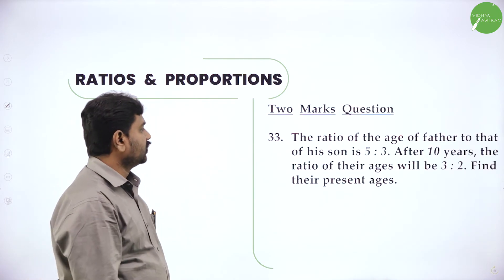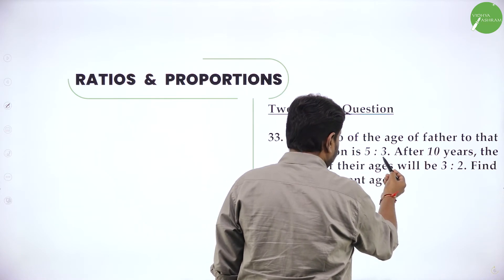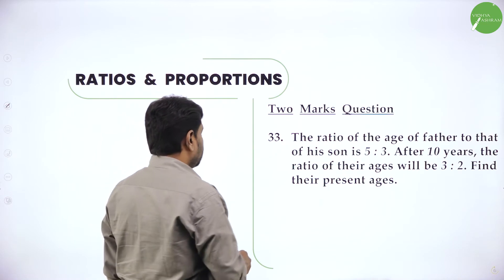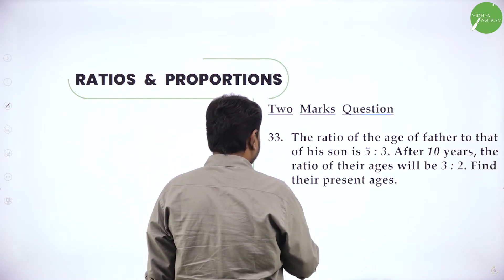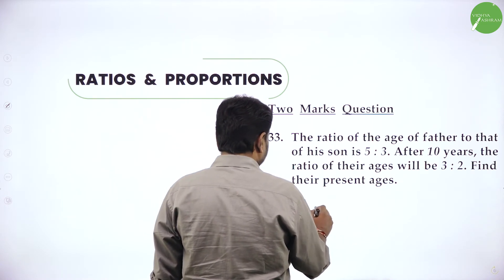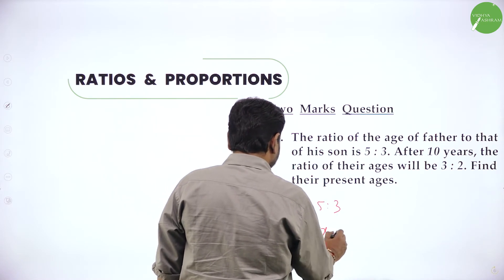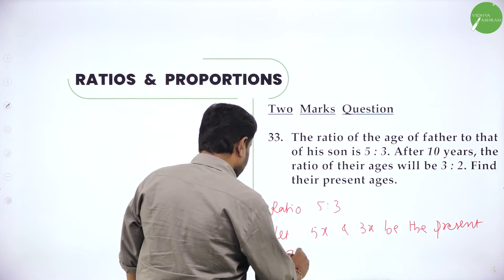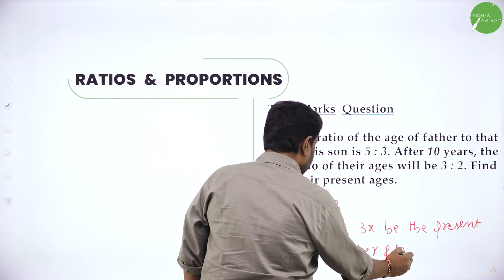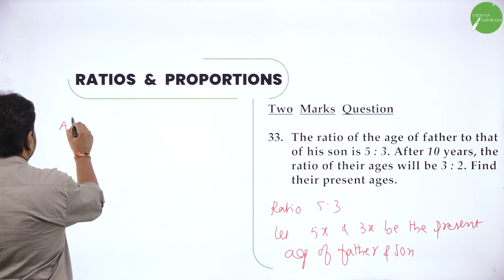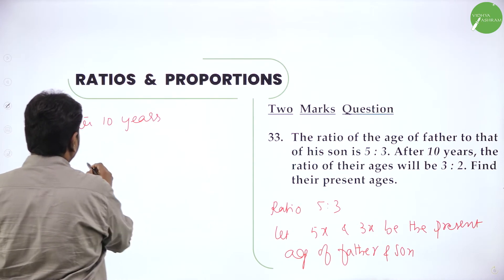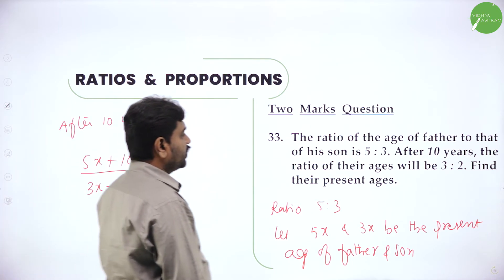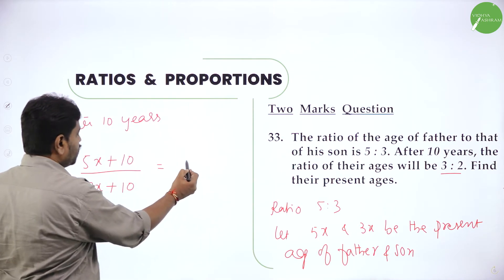Where two ratios are given, carefully should solve. The ratio of age of father to the son is 5 is to 3. After 10 years the ratio of their ages will be 3 is to 2. Find their present ages. We do not know the present ages. Ratio of present ages is 5 to 3. Therefore let 5x and 3x be the present age of father and son.